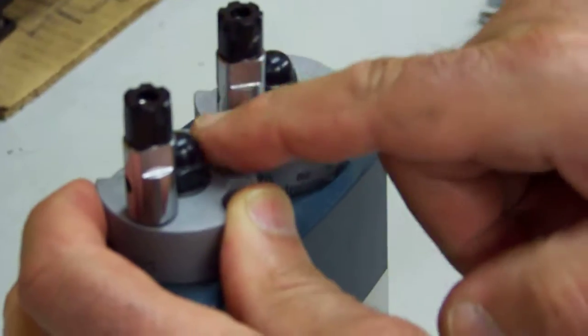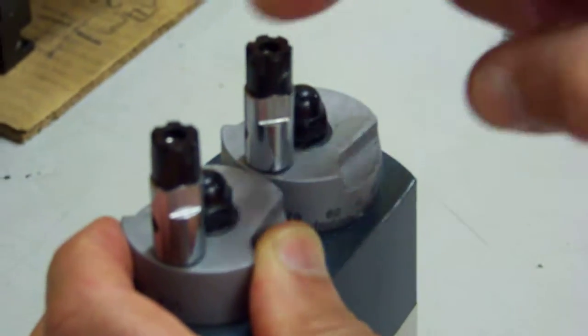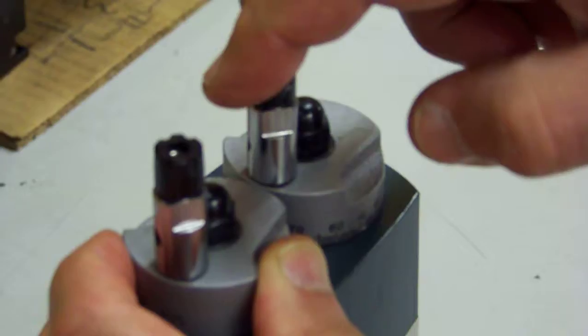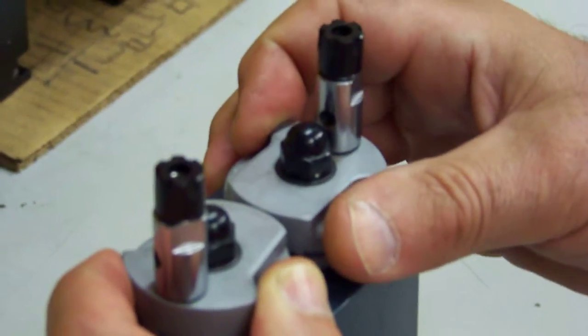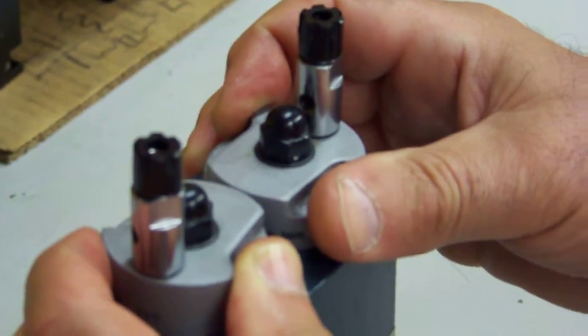When the two spindles are at their closest dimension, that's the closest center to center distance you have. Now I'm rotating it to its furthest dimension, which is the wider setting this head is capable of.